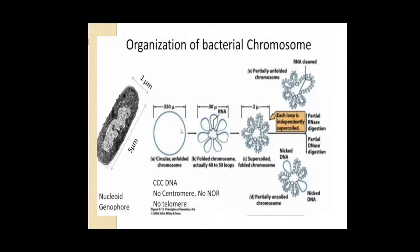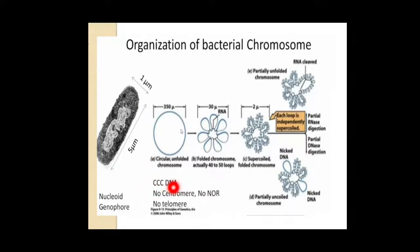The organization of the bacterial chromosome: you will see highly condensed or super-coiled genetic material. The circular DNA when unfolded forms an unfolded chromosome. Because it is circular, telomere is absent. There is no telomere, no centromere, no NOR (nuclear organizer region), and the DNA is CCC DNA — covalently closed circular DNA. Because it is circular, the telomere is absent. The completely spread chromosome is also observed.